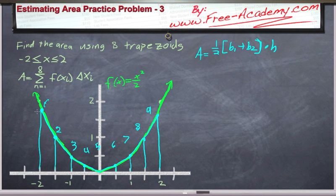And the nice thing about it is the height of each one of these bases is just going to be equal to the function evaluated at that particular spot. So we're going to need f of negative 2, f of negative 1.5, f of negative 1, and so on up to f of positive 2.